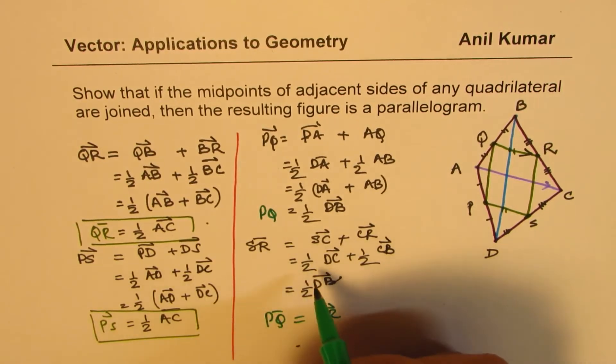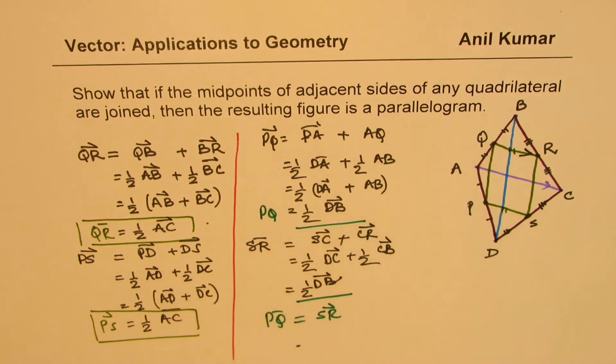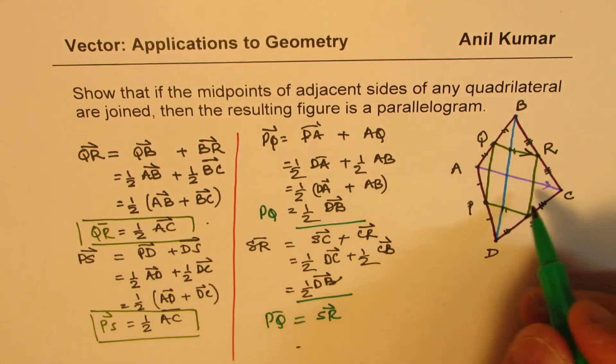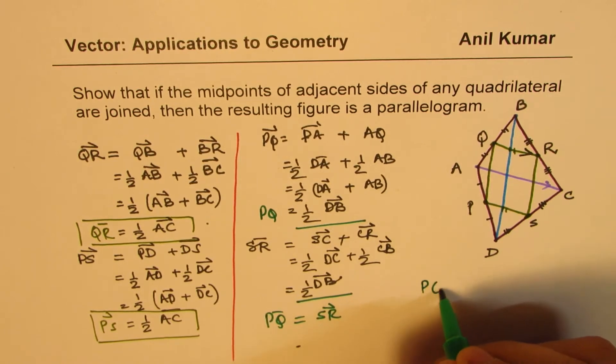So we got this P, Q equals to SR. So they are parallel and they are equal. So that is how we can say that P, Q, R, S is a parallelogram.